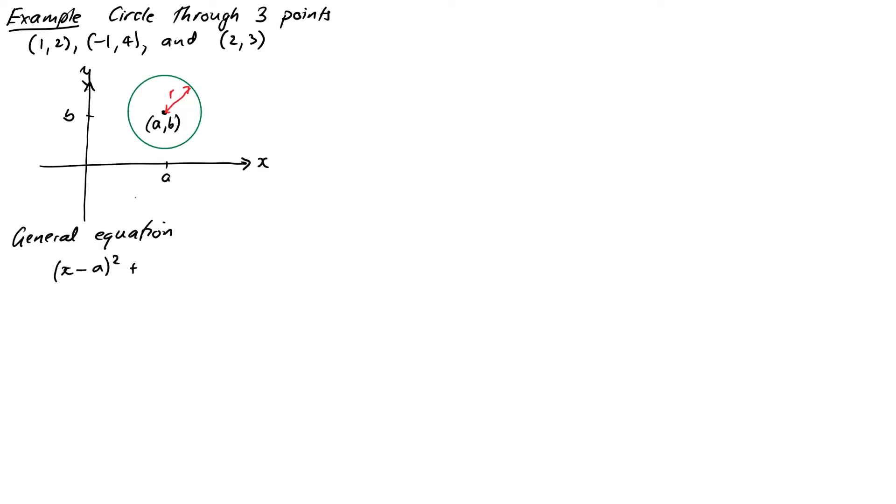Okay so let's for our second example let's try something a little bit trickier. We want to find the equation of a circle that goes through three points and let's go for the points 1, 2, negative 1, 4 and 2, 3. Okay now it's always true that we can find a circle through three points so long as they're not in a straight line. In fact that could be something you can think about later as to what would happen in that case. But the general equation of a circle is usually written as x minus a squared plus y minus b squared equals r squared.